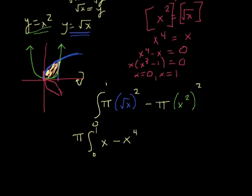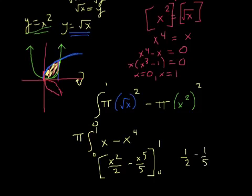Do your anti-derivative. So I get x squared over 2 minus x to the fifth over 5. I'm plugging in the boundaries of 1 and 0. 1 squared over 2 gives me 1 half. 1 to the fifth over 5 gives me 1 fifth. Subtract what you get when you plug in 0.